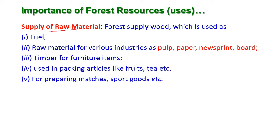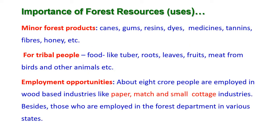Supply of raw material: forests supply wood used for fuel and raw material for various industries such as pulp, paper, newsprint, and board. Timber obtained from forests is used for furniture, packing articles like fruit and tea industries, preparing matches and sports goods. Many minor products are also available from the forest such as bamboo canes, gums, resins, dyes, medicines, tannins, fibers, honey, and many other products.